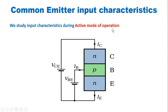What is active mode of operation? This is an NPN transistor. For active mode of operation we connect the input circuit in forward bias and the output circuit in reverse bias condition, as shown in the figure.